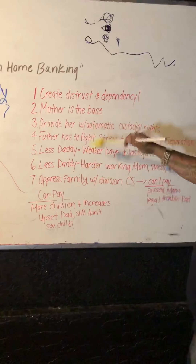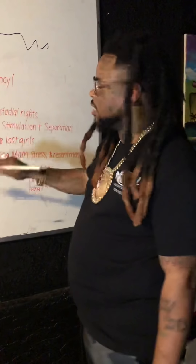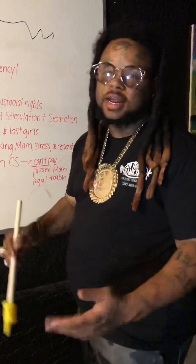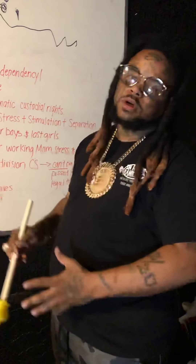Number four: the father then has to fight. This is gonna lead to stress. He's gonna have to stimulate the same economy that's trying to destroy him — he may have to get a lawyer, pay court fees, go to family court. Not only is this system causing stress to the family because of something they intentionally set up, but now the system gets stimulated because the father has to rely on the same people trying to rip his rights away in order to get them back. This also creates separation — the child automatically goes with the mom.